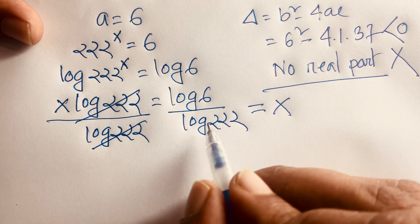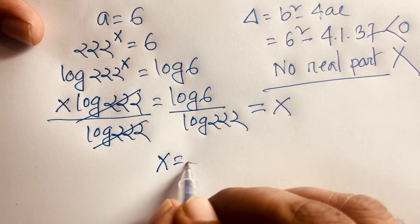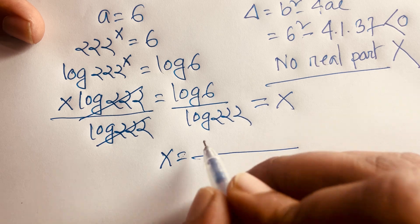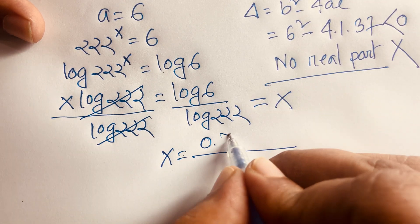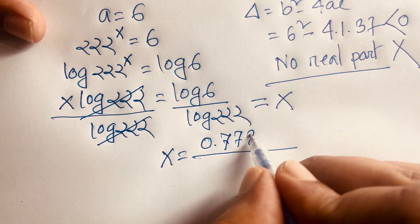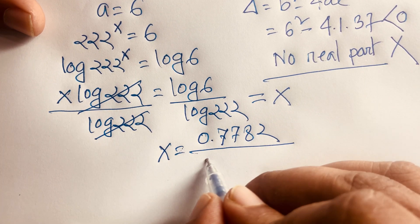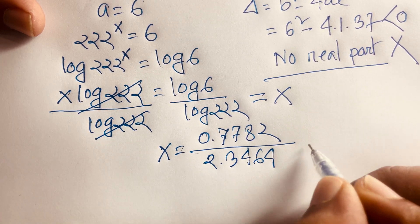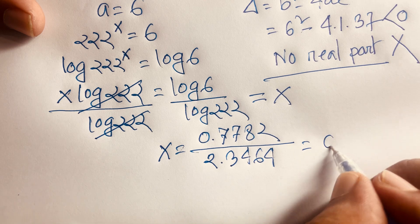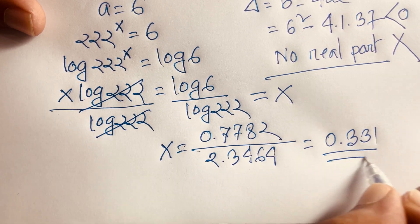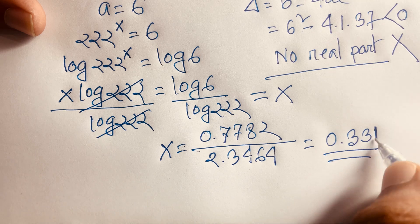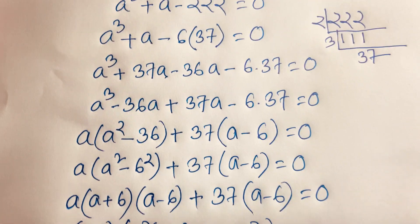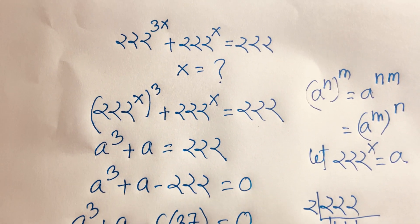Using a calculator: log 6 is approximately 0.7782 and log 222 is approximately 2.3464. Dividing gives x approximately equals 0.331. This is the value of x in this interesting math question. If you enjoyed this video, please subscribe to my channel for other interesting videos. Goodbye, take care.